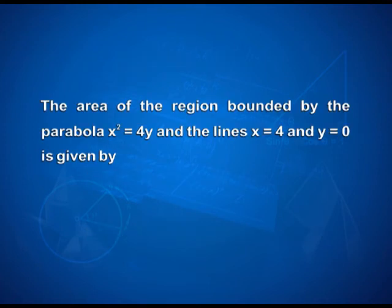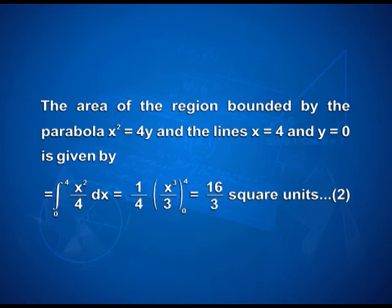The area of the region bounded by the parabola x² = 4y and the lines x = 4 and y = 0 is given by integral from 0 to 4 of x²/4 dx, which equals (1/4)[x³/3] from 0 to 4, giving 16/3 square units. Take this as the second equation.